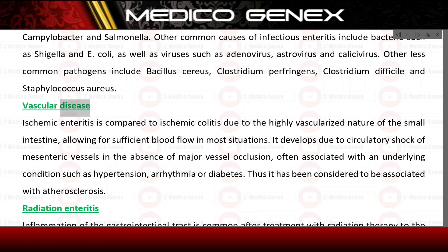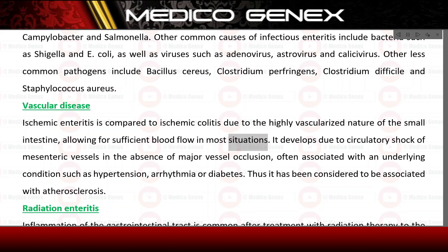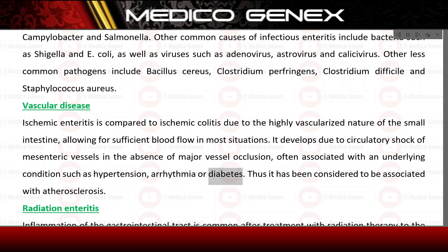Vascular disease. Ischemic enteritis is uncommon compared to ischemic colitis due to the highly vascularized nature of the small intestine, allowing for sufficient blood flow in most situations. It develops due to circulatory shock of mesenteric vessels in the absence of major vessel occlusion, often associated with an underlying condition such as hypertension, arrhythmia, or diabetes, and has been considered to be associated with atherosclerosis.